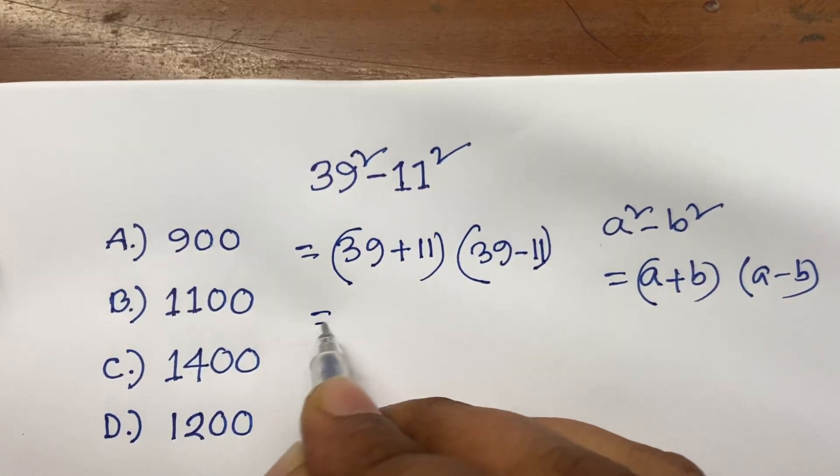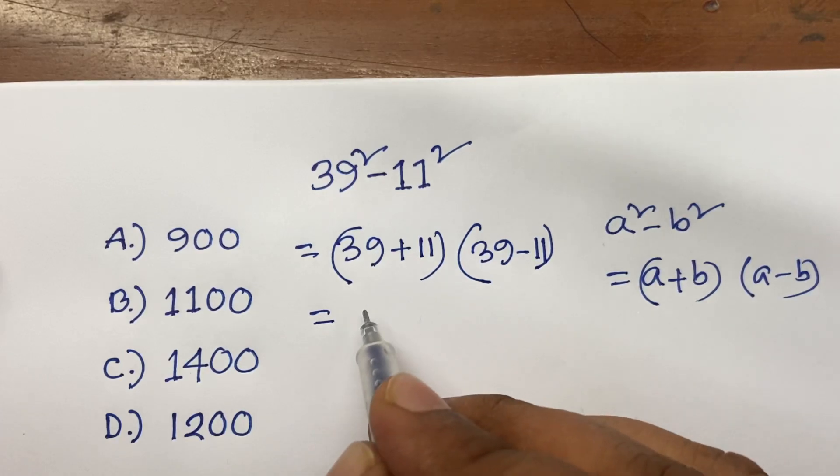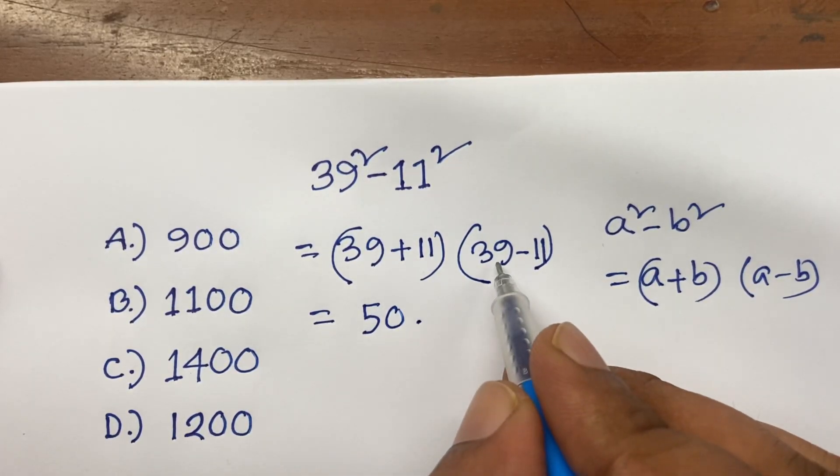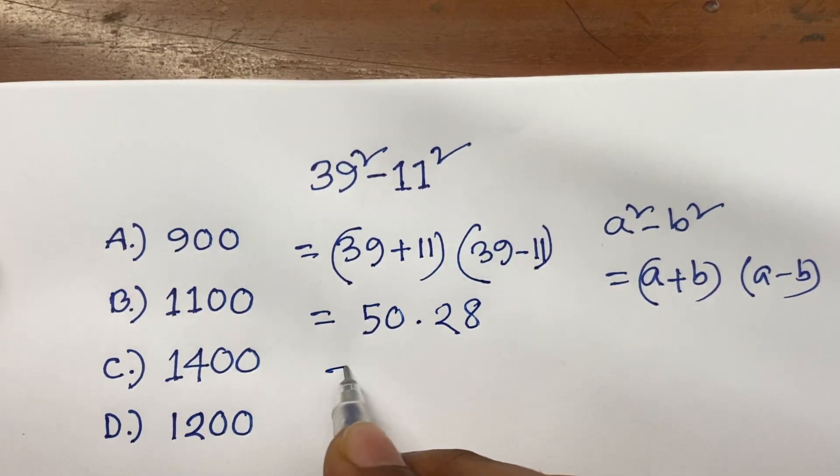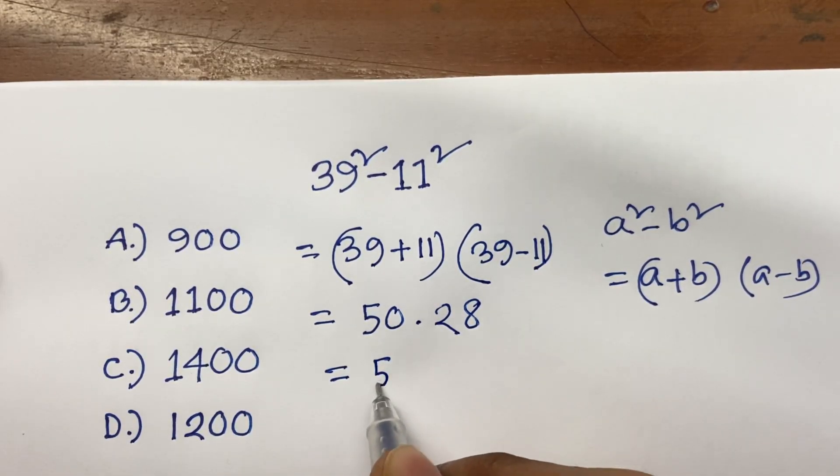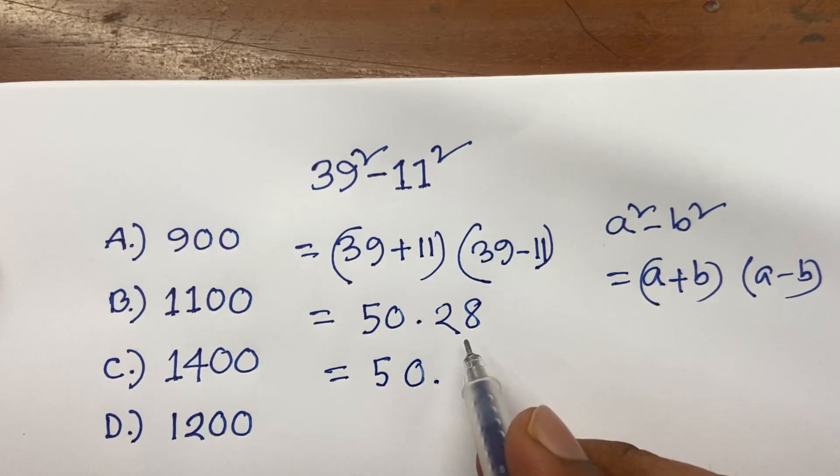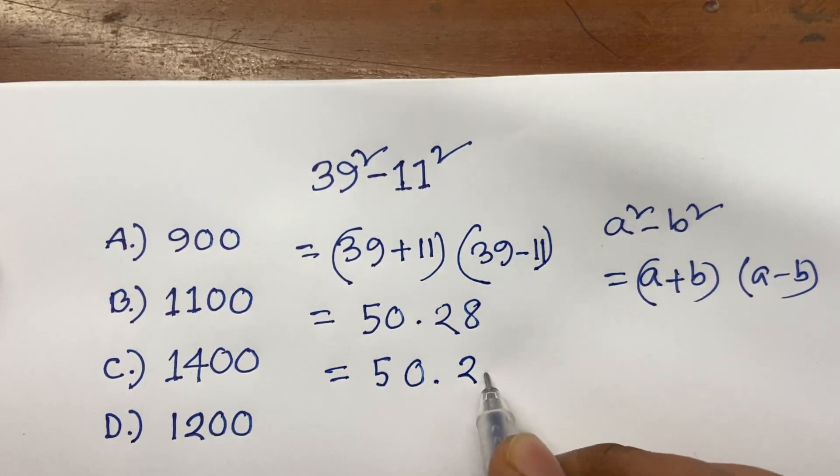Now I can say 39 plus 11 is equal to 50, times 39 minus 11 is equal to 28. Now I can say here is 50 times 28, which is like 50 times 2 times 14.